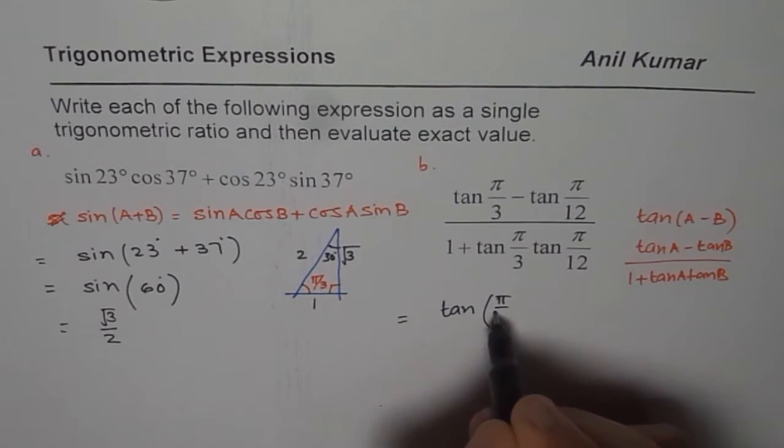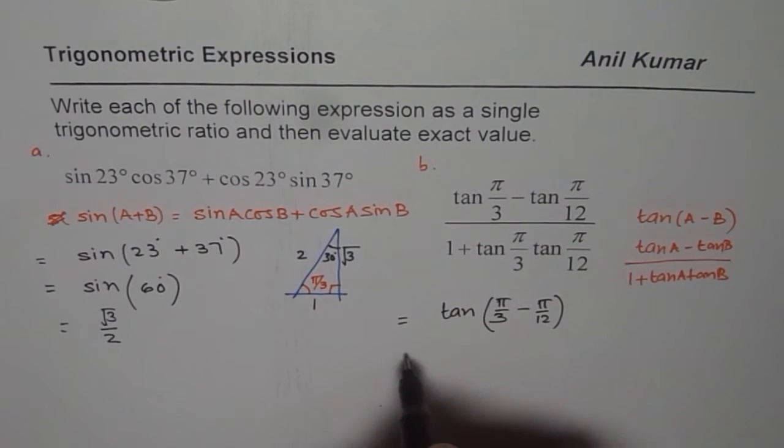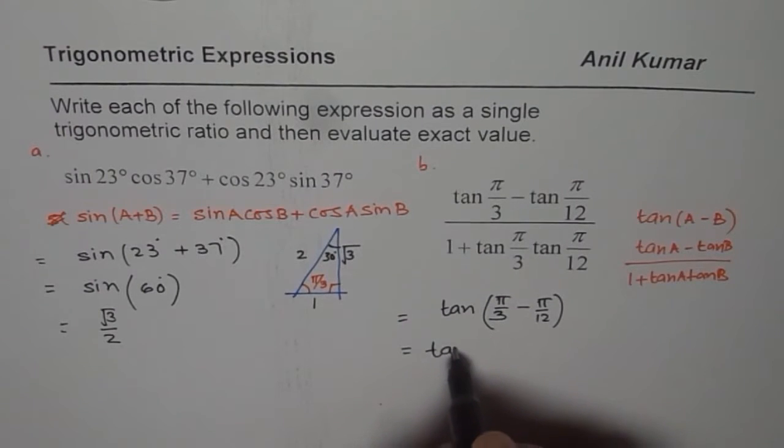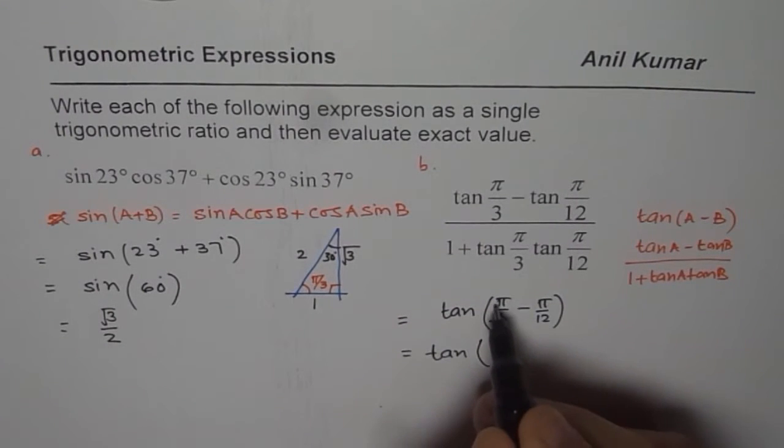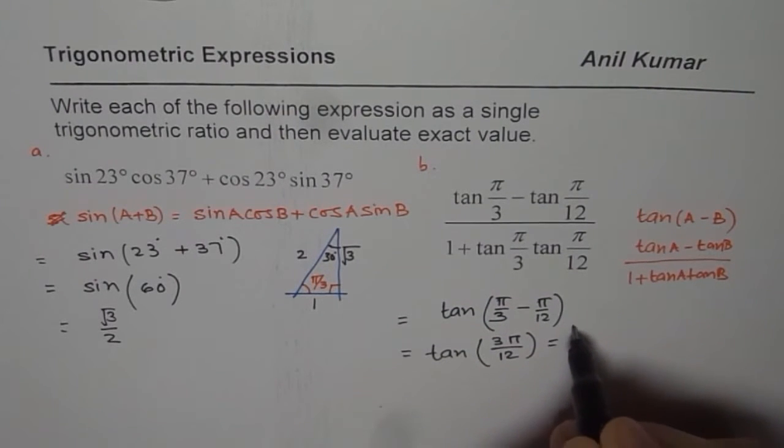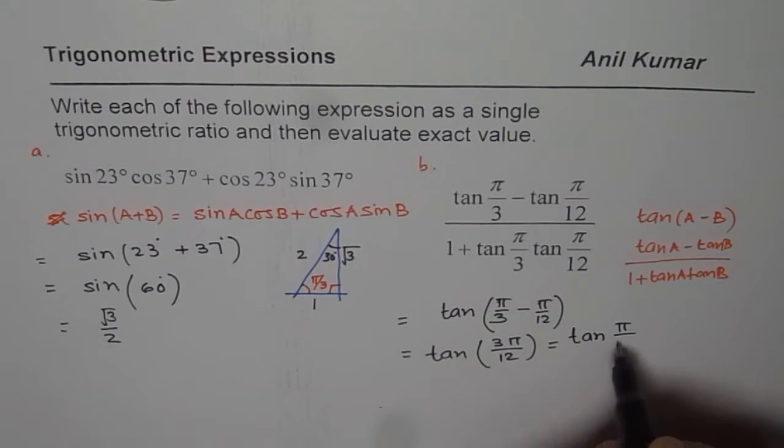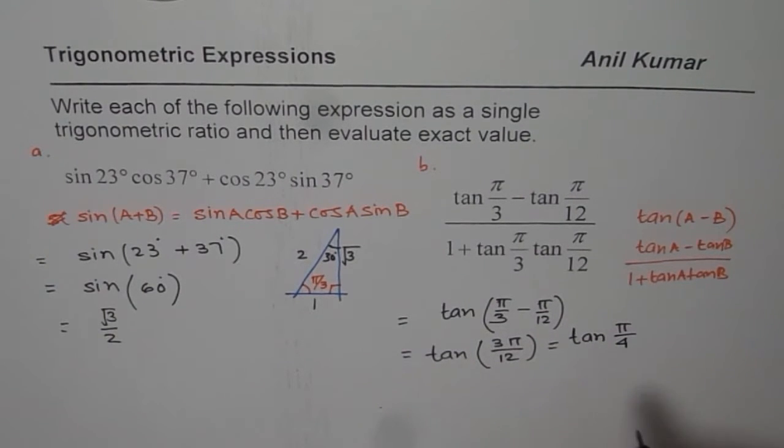We can write this expression as tan(A-B). A is π/3 for us and B is π/12. So that is 4π/12 minus π/12. This is 3π/12, or equal to tan of π/4.